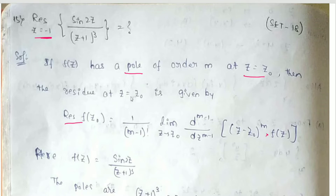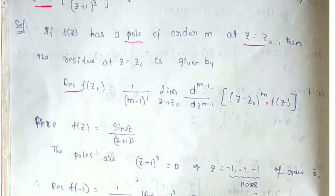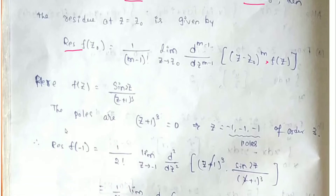Here z-naught value is minus 1. The function is f(z) = sin(2z) / (z+1)³. The poles are found by setting the denominator equal to zero, giving z = minus 1, three times — so it is a pole of order 3.